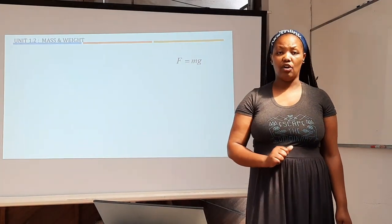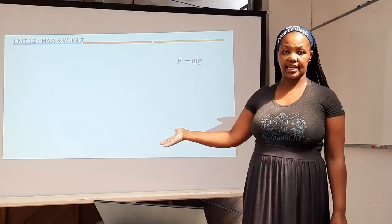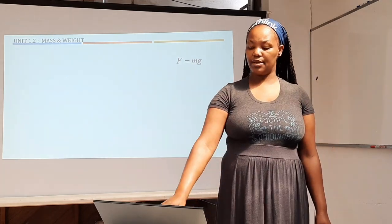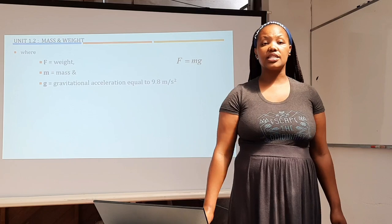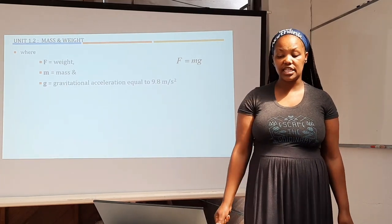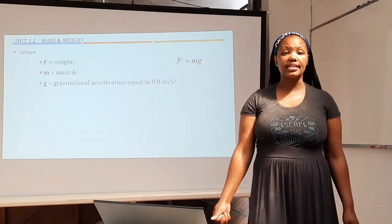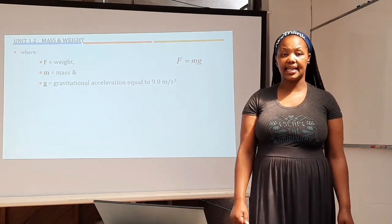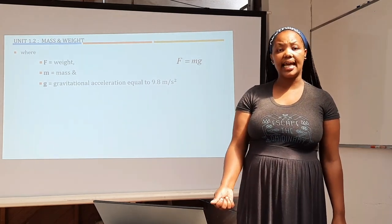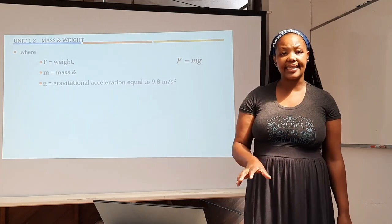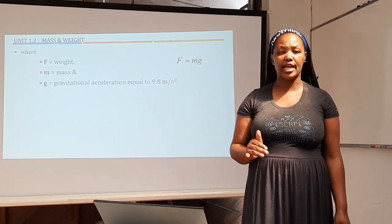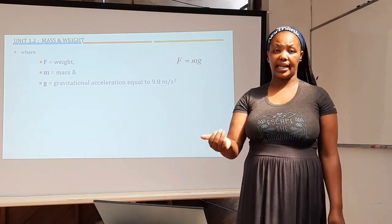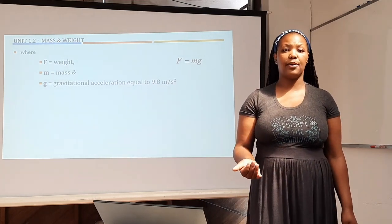The topic is based on this equation which is the second equation that we have on the formula sheet. F equals M times G, where F is the weight which is the gravitational force, M is the mass of the object, and G is the gravitational acceleration. Now the gravitational acceleration for planet Earth is the constant value of 9.8 meters per second squared. Constant values are given on the question paper.